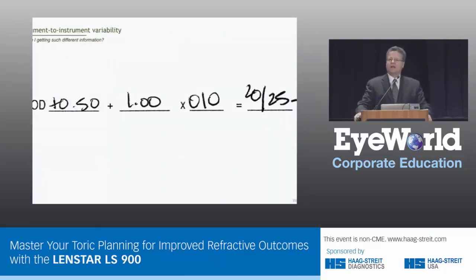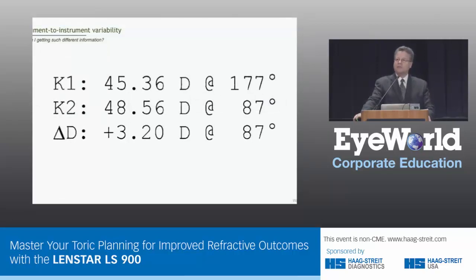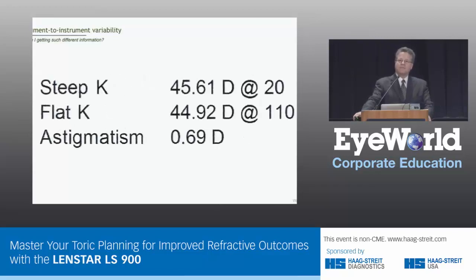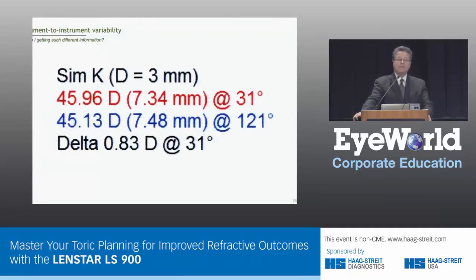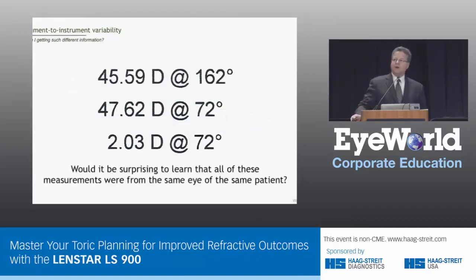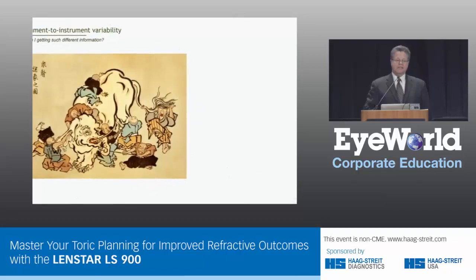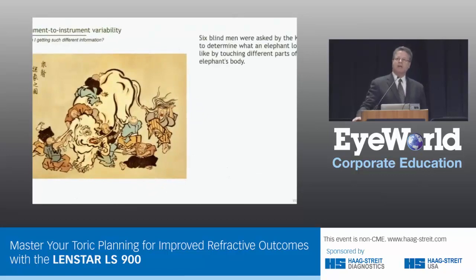So what is it that we need for the Toric IOL? There are lots of ways to get information. We can look at the patient's spectacle refraction — here we have about a diopter of against-the-rule astigmatism. We can look at small zone autokeratometry — here's a little more than three diopters with the rule. Some simulated keratometry, a little more than half a diopter, looks like against the rule. Ray tracing keratometry, a little more than three-quarters of a diopter on the oblique meridian. And more small zone autokeratometry, about two diopters with the rule. Would it be surprising to learn that all of these measurements were from the same eye of the same patient? And this is one of the problems we have with the Toric IOL.